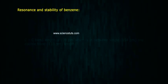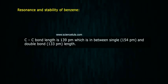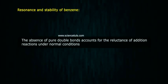The C-C bond length in benzene is 139 picometers, which is intermediate between a single bond (154 picometers) and a double bond (133 picometers). The absence of pure double bonds accounts for the reluctance of benzene to undergo addition reactions under normal conditions.